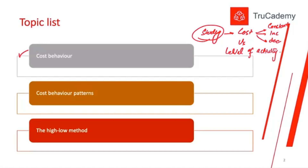Cost behavior is a study where we see the relationship between cost and the level of activity. Level of activity is any particular activity that we are performing in our production department or organization. For example, if in January I produce 1,000 units and in February I produce 2,000 units, I have increased my level of activity — and how any cost reacts to this change is what we call cost behavior.